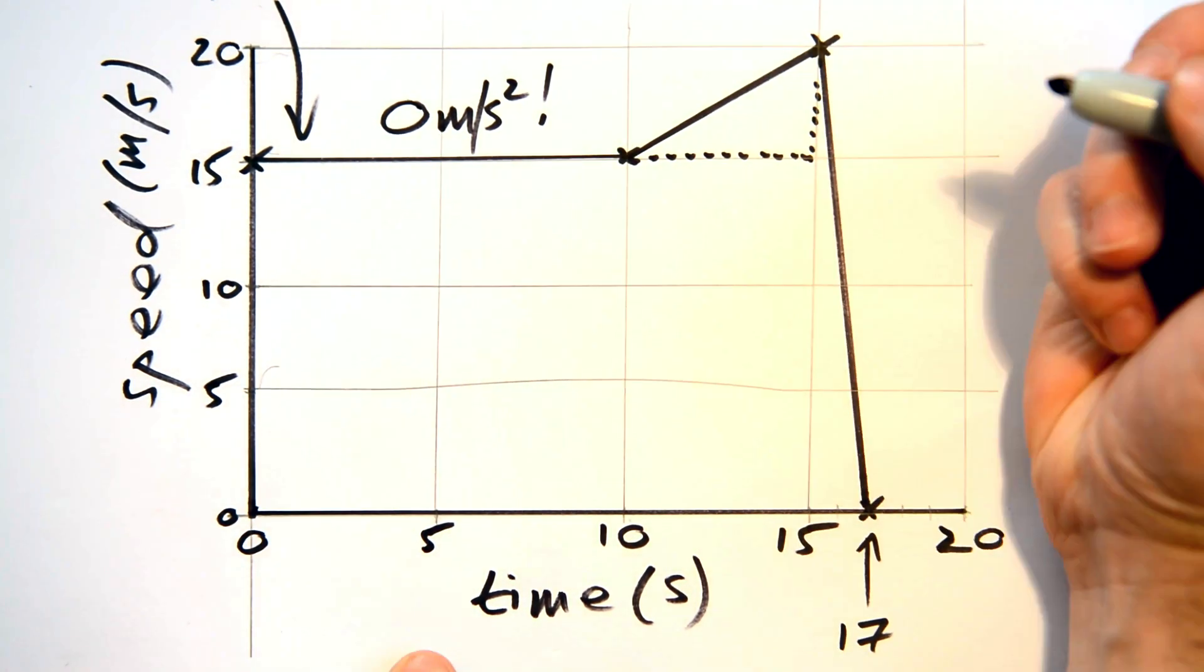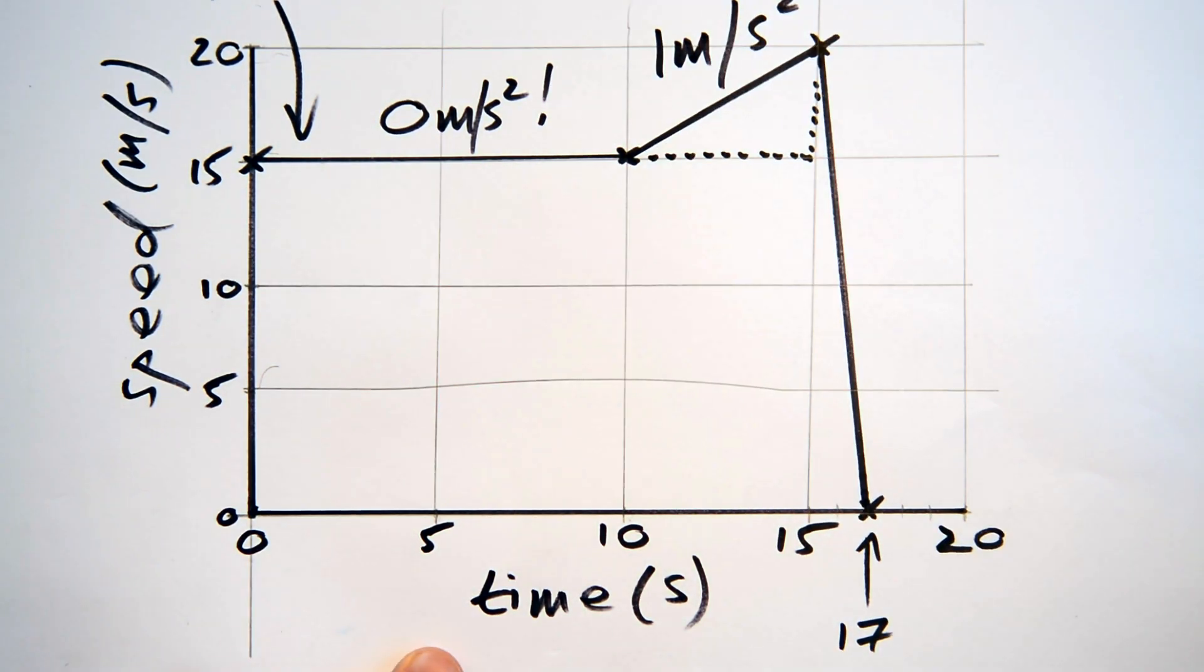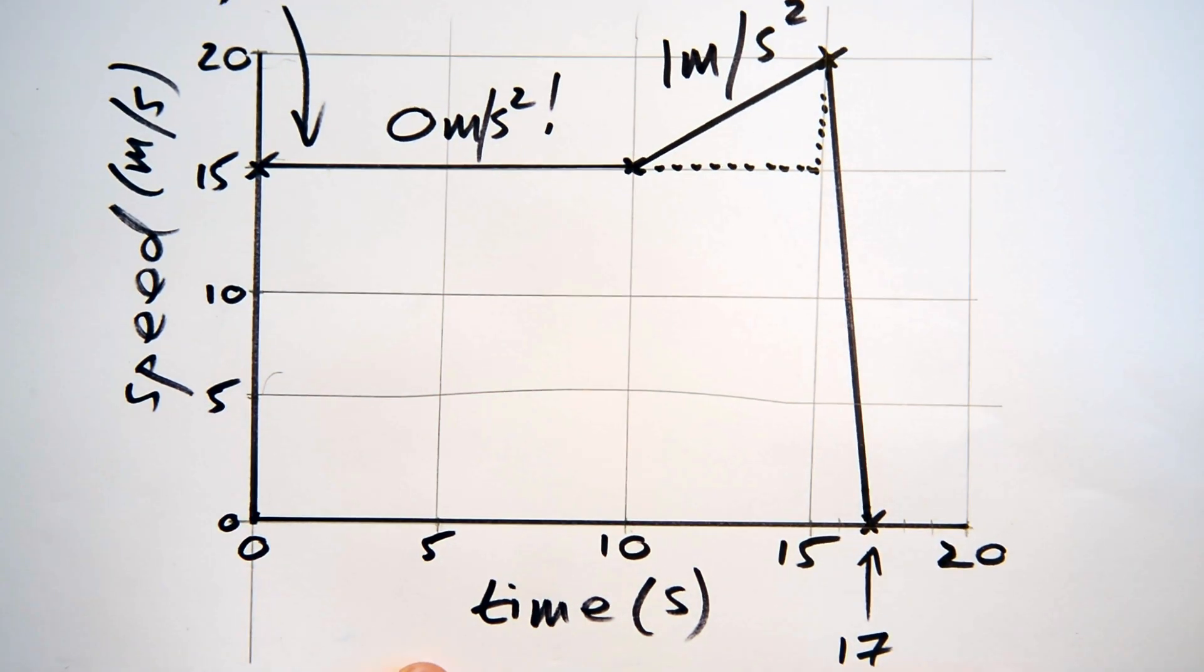Okay, next. Here his change in speed is 20, take away 15, so that gives us five metres per second, and that takes him five seconds, so his acceleration is five divided by five equals one metres per second squared.